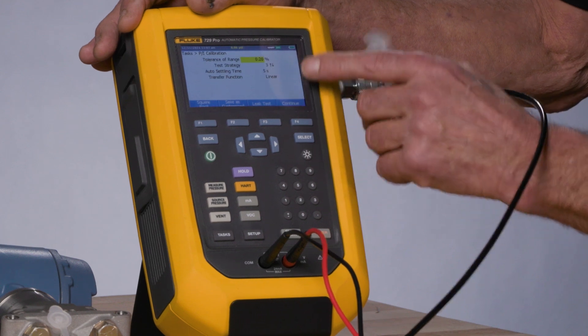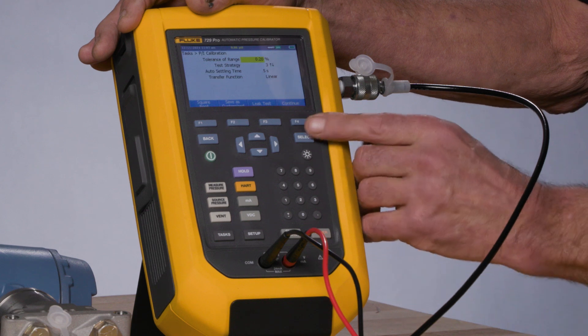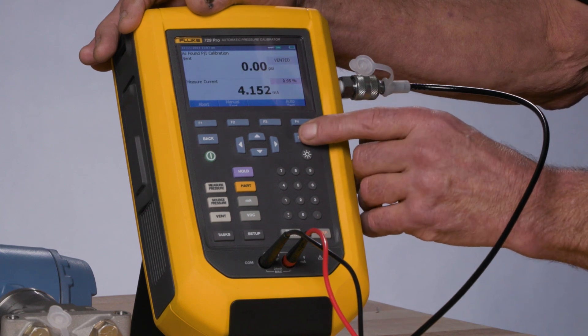If I press continue, we can see the test tolerance and the number of test points we're going to test. If I press continue, and then auto test,